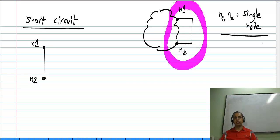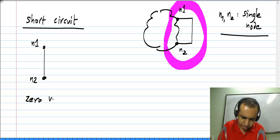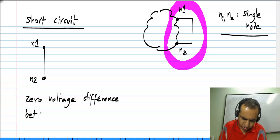We will look at the nature of this short circuit, it is quite trivial really, but we will still look at that. What does the short circuit between N1 and N2 mean? It means that there is zero voltage difference between the two nodes.